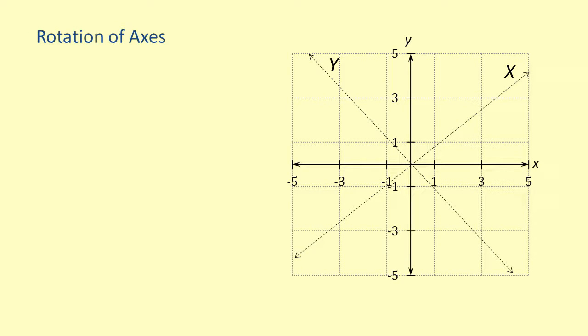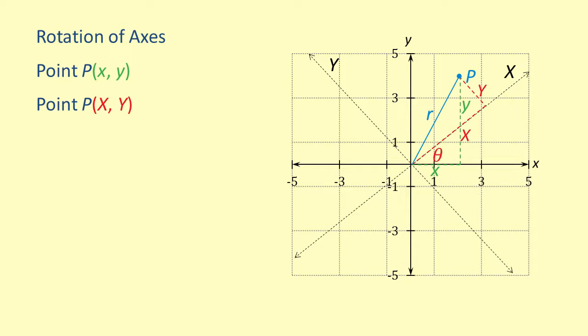Let the new XY coordinate system be displaced from the xy coordinate system by a rotation of theta degrees. Note that we are speaking generally, not using specific values. Let P equal some point at distance r from the origin. We can represent the point P as the point xy on the original coordinate system, or capital XY on the new coordinate system. We will define angle alpha as the angle that r makes with the new X axis, which means that alpha plus theta is the angle that r makes with the original X axis.